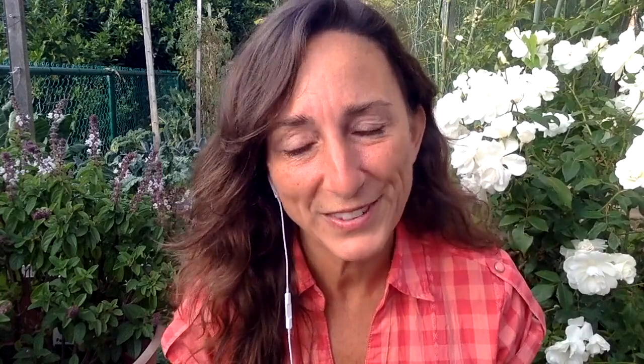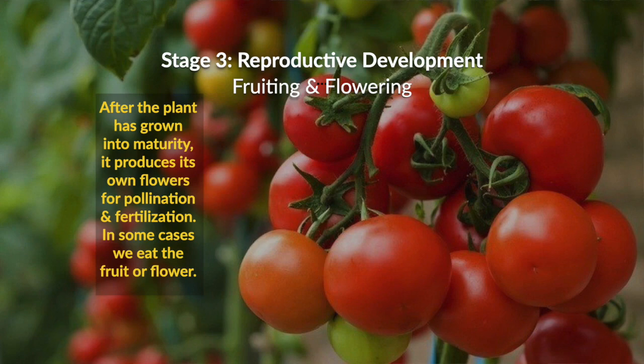Stage three is the reproductive stage — otherwise known as fruiting and flowering. This is what we look forward to: tomatoes, peppers, cucumbers, and all those delicious vegetables. The plant is hormonally changing because it's producing seeds for the next generation. For your green plants — kale, collard, lettuces — this hormonal change can affect flavor. Many people notice greens that have gone to flower are a little more bitter, though some enjoy that.